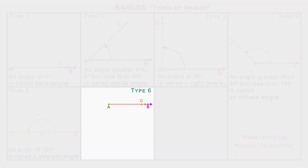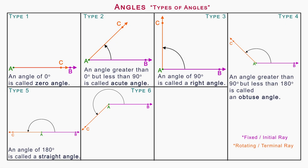Type 6: Reflex angle. On rotating the terminal ray in anti-clockwise direction as shown on the screen, the angle formed is called a reflex angle. An angle greater than 180 degrees but less than 360 degrees is called a reflex angle.